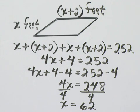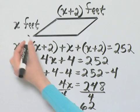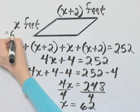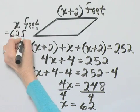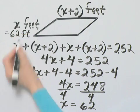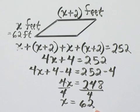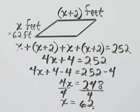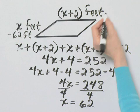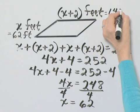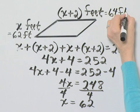What does that mean? We just finished solving. Now let's interpret. x is 62, so this dimension is 62 feet. And then what is x plus 2? That's 62 plus 2, that's 64 feet. So I'll go ahead and write that as 64 feet.